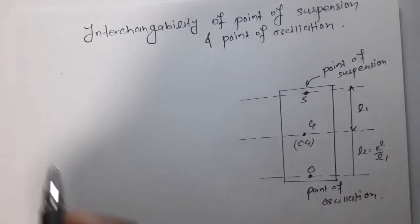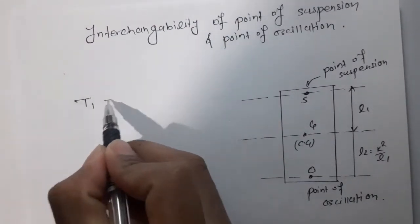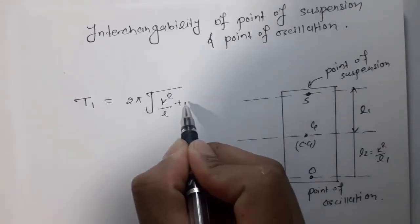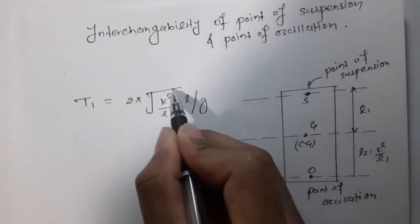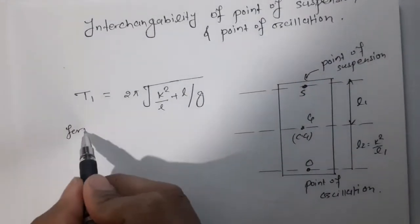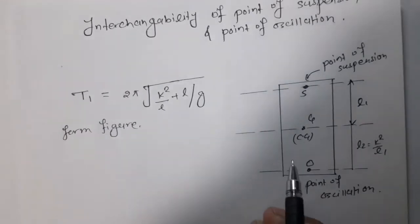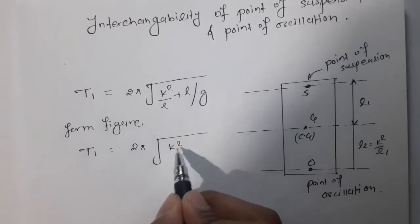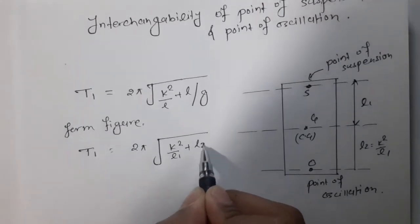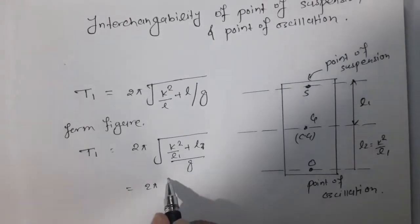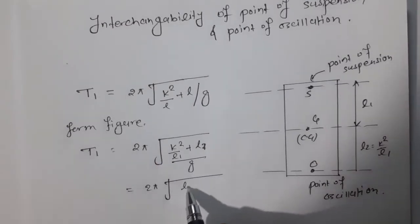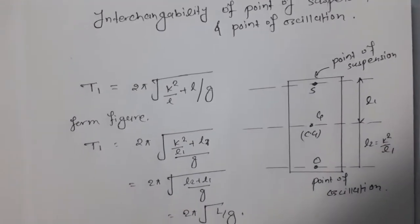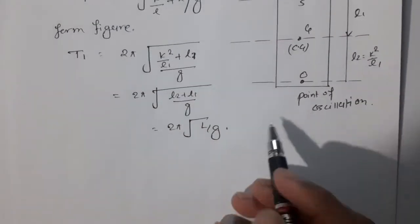We know time period T1 is equal to 2π times the square root of (K squared by L plus L) upon G. From the figure, T1 is equal to 2π times the square root of (K squared by L1 plus L1) upon G, which gives 2π times the square root of (L2 plus L1) upon G, or 2π times the square root of L upon G.